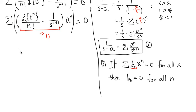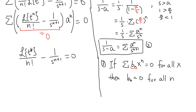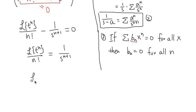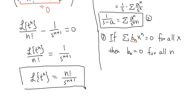Therefore, the Laplace of t to the n power over n factorial minus 1 over s to the n plus 1 must equal zero for all n. Rearranging, the Laplace of t to the n power over n factorial equals 1 over s to the n plus 1. Multiplying both sides by n factorial gives us our final result: the Laplace of t to the n power equals n factorial over s to the n plus 1.